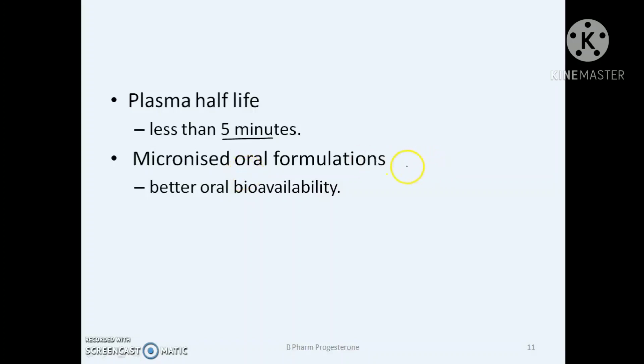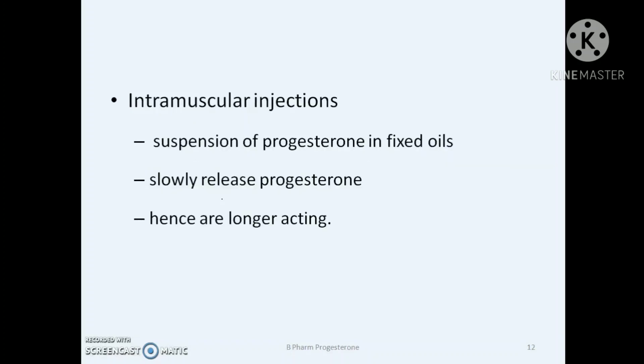It is extremely difficult to achieve effective blood levels by any dosage form. Micronized oral formulations containing higher amounts of progesterone to compensate for extensive first-pass metabolism are available for better oral bioavailability. Also, intramuscular injections containing suspension of progesterone in fatty or fixed oils are available that slowly release progesterone from these depot preparations and hence are longer acting.